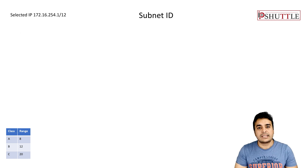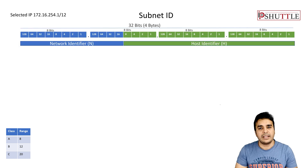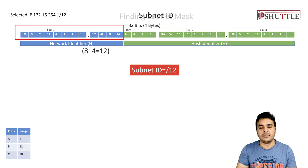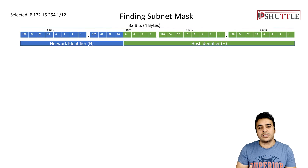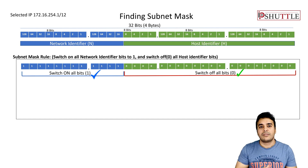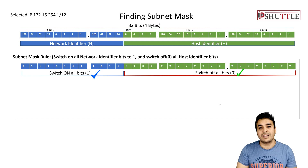The next part is the subnet mask. You will hear both 'subnet ID' and 'subnet mask.' Subnet ID tells you how many bits are part of the network identifier. Subnet mask is calculated by switching on all the bits that are part of the network identifier and switching off all the bits that are part of the host identifier. With our example 172.16.254.1, the network ID is 172.16.0.0/12, and slash 12 is your subnet ID. We now convert these 12 bits to calculate the subnet mask.